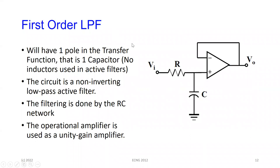Now we move to active filters. The first-order active low pass filter takes a simple RC network and attaches it to a non-inverting amplifier — basically a buffer. This is a low pass circuit, and you can reason it out intuitively. If I put a signal in here at low frequencies, the capacitive reactance is high, so the capacitor appears almost as an open circuit. Most of the signal passes into the amplifier and gets through.